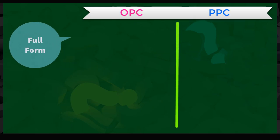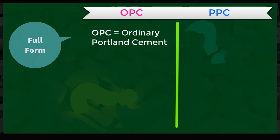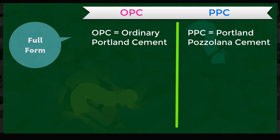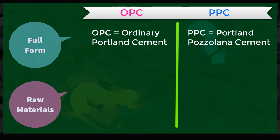First of all, you all have to know the full form of OPC and PPC. OPC stands for Ordinary Portland Cement and PPC stands for Portland Pozzolana Cement. In the manufacturing process of OPC, the raw materials needed are as follows.